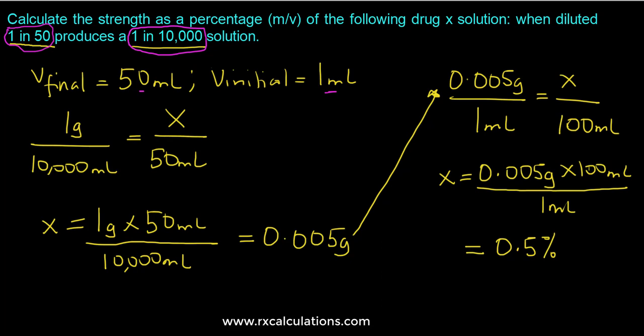And so you make use of the final concentration 1 gram out of 10,000. You set up this proportion to figure out how much of the drug is in the 50 ml that you just prepared and since that is coming from the 1 ml.